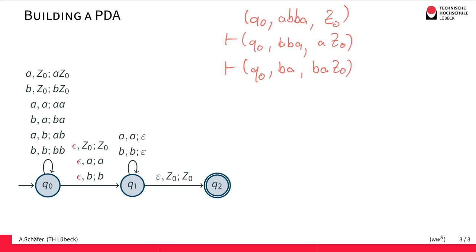And now we decide non-deterministically that we take this transition here and switch state. So we simply move to Q1. And in Q1 we do not change anything.